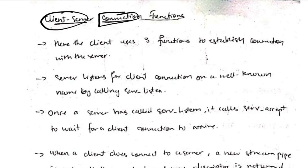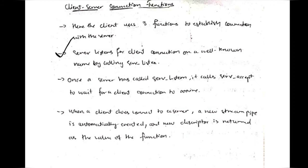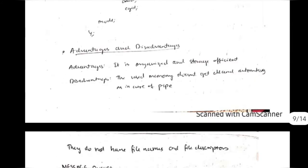If you have to do the communication between the client and the server, first the connection needs to be made. There are three functions for that purpose. The server listens for the client connection, and once the server has called the server listen, it will wait for the client connection to arrive. When that happens, it connects to the server and a new stream pipe is automatically created and the new descriptor is returned.